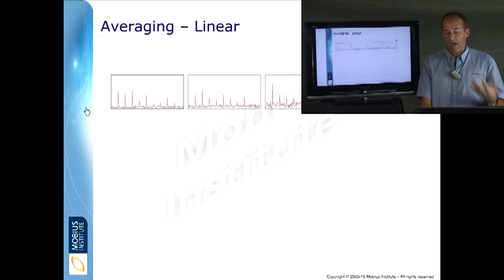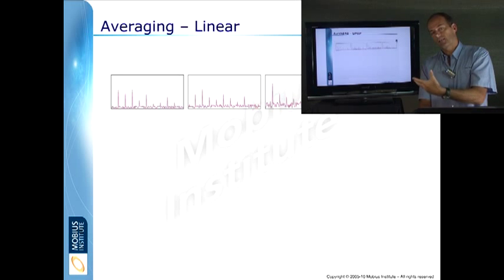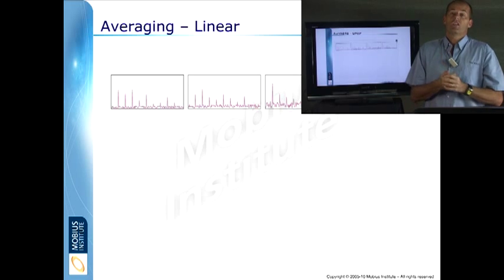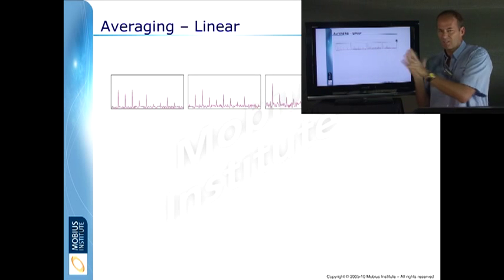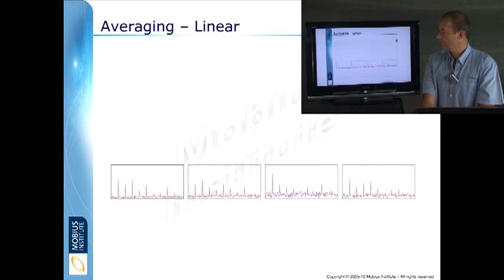So let's look at how that actually happens. There are our four spectra that were calculated by the data collector. We've got another presentation that talks about overlap averaging, which is a slightly different process, but we'll have a look at that as a separate mini presentation.